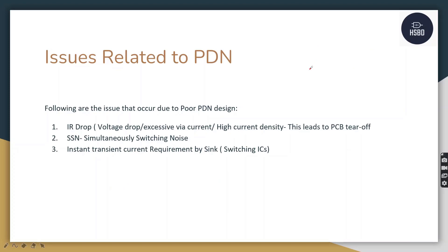There are two kinds of approaches for PDN issues: DC and AC. The DC approach includes issues related to IR drop across the plane — specifically voltage drop across the plane, excessive via current, and high current density. These three important issues can lead to PCB tear-off.